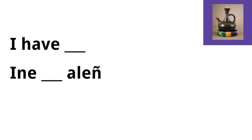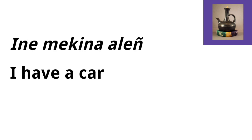For the first person pronoun, I — 'ene' — to say 'I have' we would say 'ene ailein.' So 'I have blank' would be 'ene, blank, ailein.' An example: 'ene makina ailein,' which means 'I have a car.' 'Makina' means car, and 'ailein' is the first person conjugation for menor in Amharic.